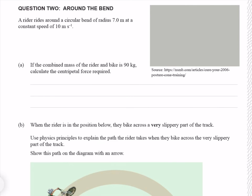Question 2. A rider rides around a circular bend of radius 7 meters at a constant speed of 10 meters per second. If the combined mass of the rider and bike is 90 kg, calculate the centripetal force required. Centripetal force is found using F = mv²/r, where we know the mass, velocity, and radius. That gives me 1300 newtons to two significant figures.